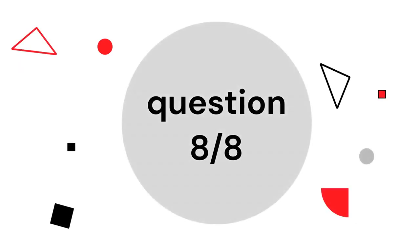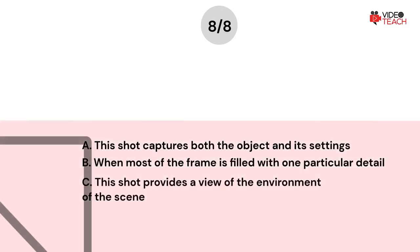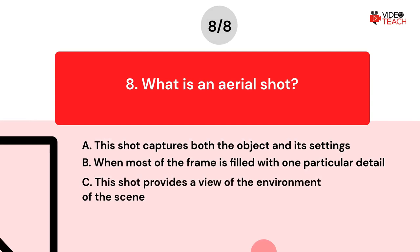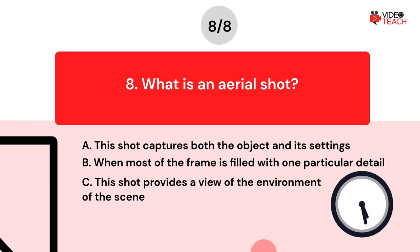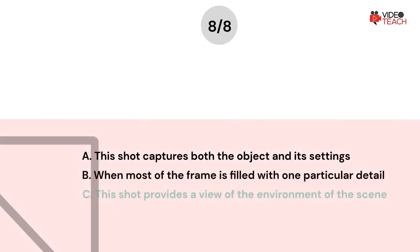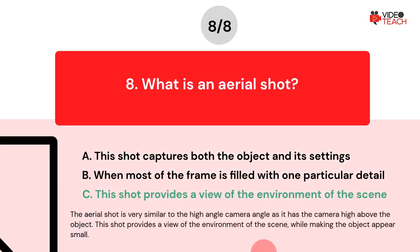Question number eight. What is an aerial shot? Option A: This shot captures both the object and its settings. Option B: When most of the frame is filled with one particular detail. Option C: This shot provides a view of the environment of the scene. The correct answer is Option C. The aerial shot is very similar to the high angle camera angle as it has the camera high above the object. This shot provides a view of the environment of the scene while making the object appear small.